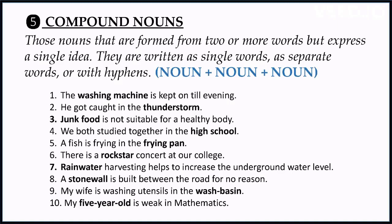You can also write compound nouns with a hyphen. For example: 'My wife is washing utensils in the wash-pit' — there is a hyphen. Or: 'My five-year-old is weak in mathematics' — 'five-year-old' tells you that you have a child who is five years old. So compound nouns can be written as a single word, as separate words, or with hyphens.